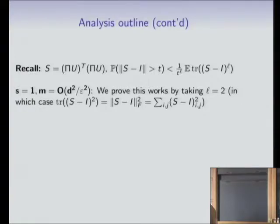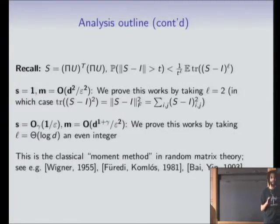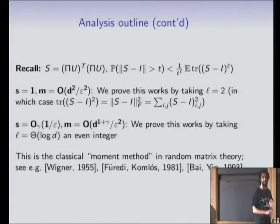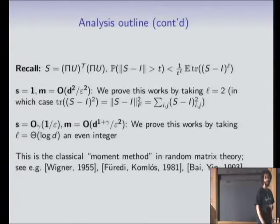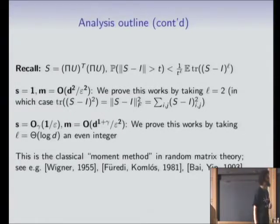We can choose L to be any even integer. If we choose L equal to 2, we get M can be roughly D-squared over epsilon-squared with sparsity s equal to 1. If we choose L to be roughly log D, we get the near-optimal bound. This approach of bounding operator norms of random matrices by traces of large powers is not new — people have done this since the beginning of random matrix theory.